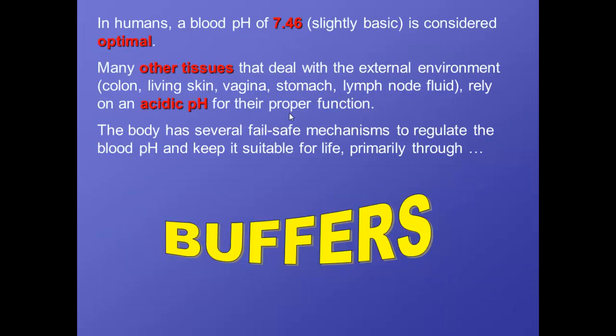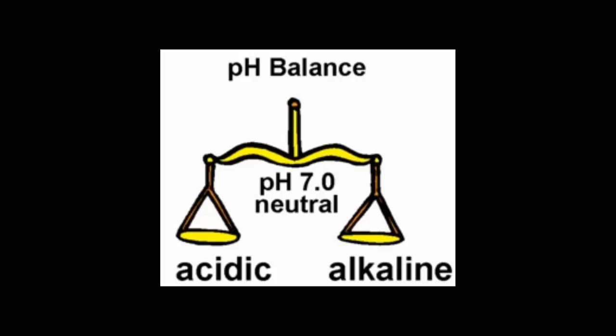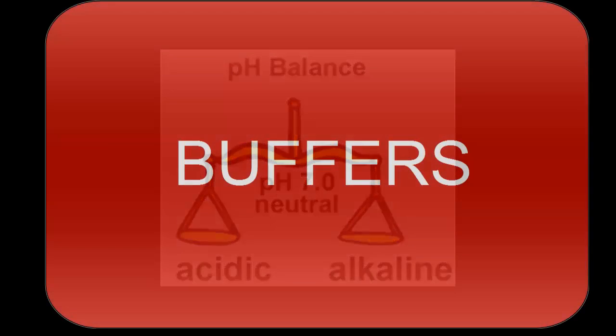In humans, our blood pH, we try to keep it around about 7.46. That's slightly basic. That's considered optimal. And like I say, our bodies have all these different mechanisms to try to keep it at about 7.46. And many other tissues in your body like a different pH. The stomach enjoys a pH of about 2.5. The vagina needs a very acidic pH to ward off invaders, maintaining a different pH in different parts of the body. And mostly, it does that through buffers.